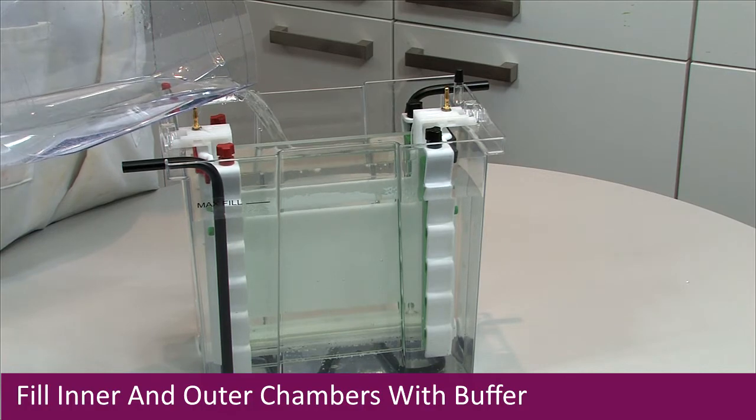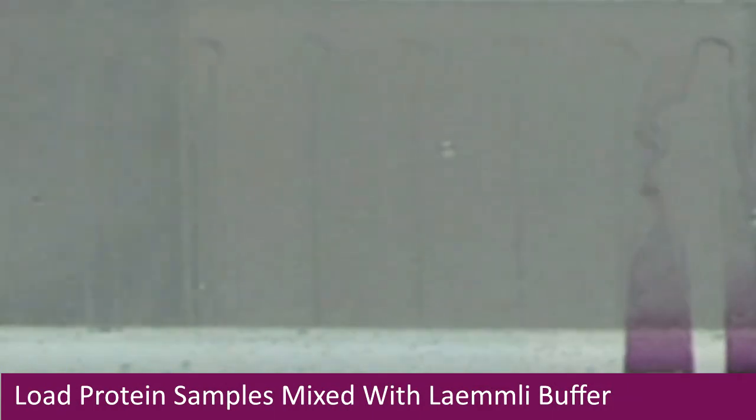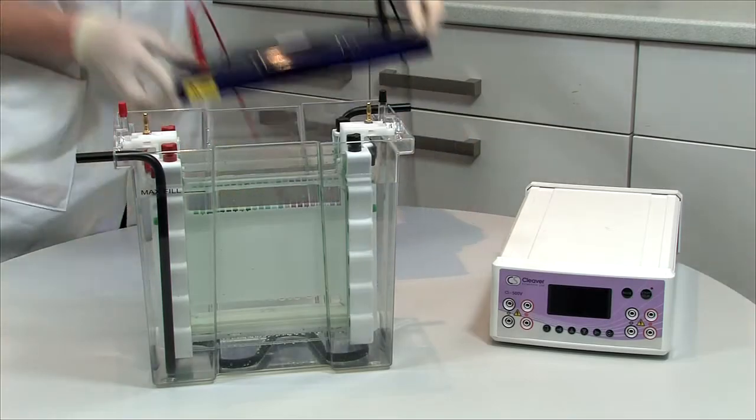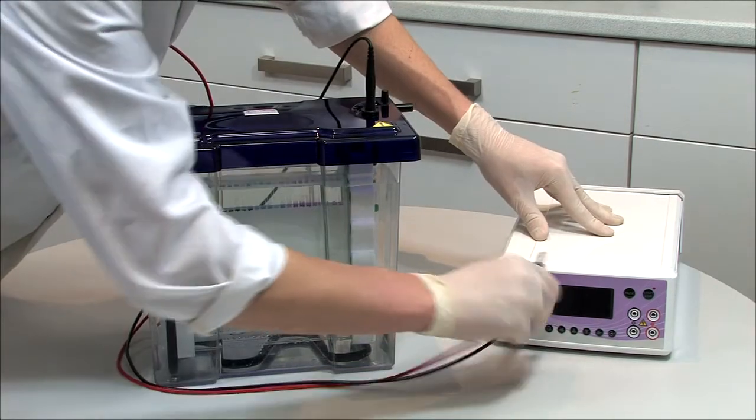Use the provided loading indicator as a template to position the pipette above each well during loading. After loading, replace the lid and insert the power cables into the corresponding colour coded ports in the power supply.